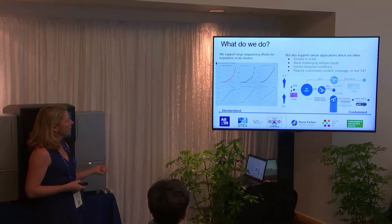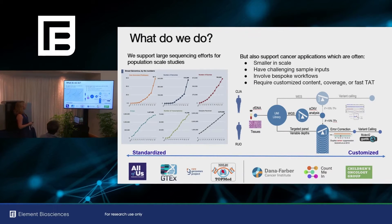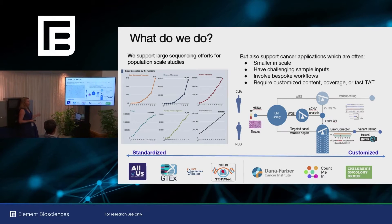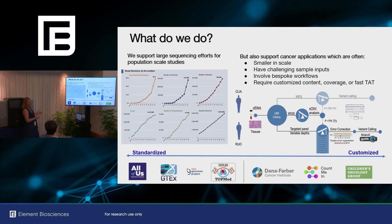Just to introduce a bit about what we do at the Broad — we're a large-scale sequencing operation. A lot of the sequencing we do is for large population-scale studies like whole genome analysis. We have done about 500,000 whole genomes as part of the AOU project and other large-scale datasets. We've also run 750,000 whole exomes. So the majority of the work we do is these large-scale, very standardized assays.